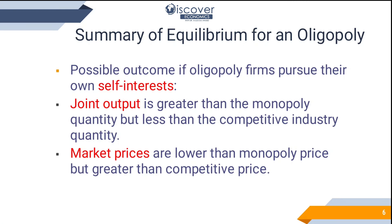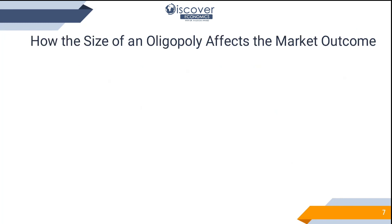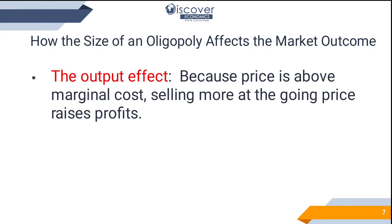In competitive markets, companies are price takers, while in monopoly you are a price maker. In oligopoly, prices are above competitive levels but below monopoly levels. The total profits are less than the monopoly profit — overall profits are lower than what a monopoly would enjoy.